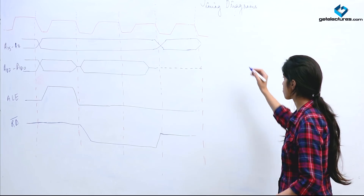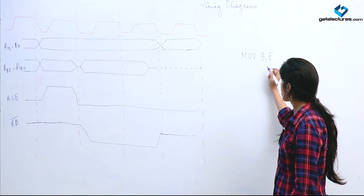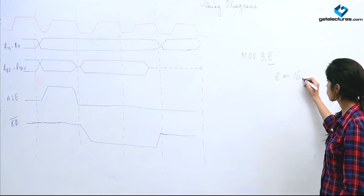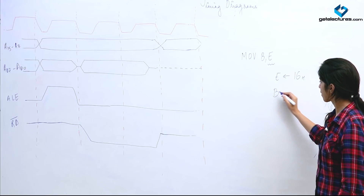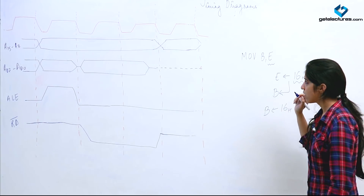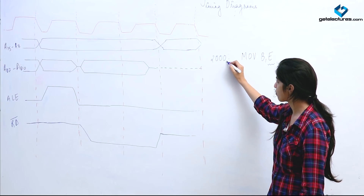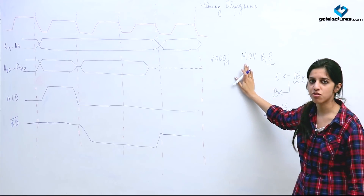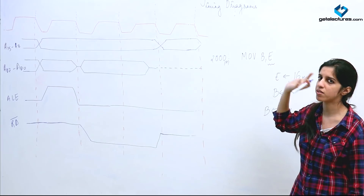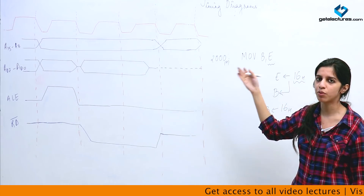Now we look at the timing diagram for another instruction: MOV B, E. This is a register addressing mode instruction. Whatever the contents of register E — suppose E holds 16H — after this instruction, those contents are moved to register B, so B becomes 16H. Suppose the starting location for this instruction is 2000H. Since both source and destination are registers inside the microprocessor, no memory read or write is involved. Only one machine cycle — opcode fetch — is needed, and the instruction is also executed in that same machine cycle.